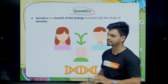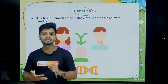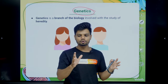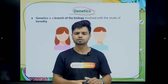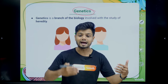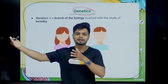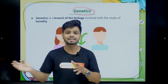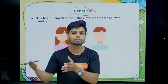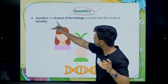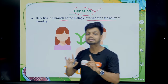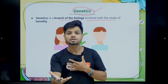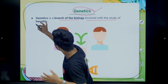The first definition here is genetics. This chapter — the heredity chapter — actually belongs to a particular section of biology. You broadly know biology is divided into botany and zoology, but apart from those, there are other fields such as microbiology, biochemistry, molecular biology, and cell biology. One such field is genetics. Genetics is a branch of biology involved with the study of heredity.